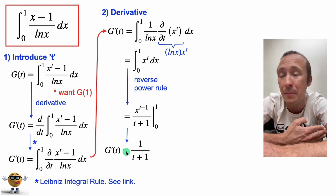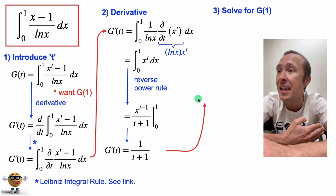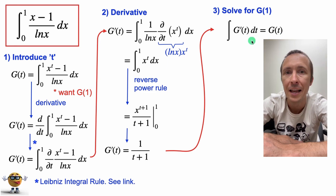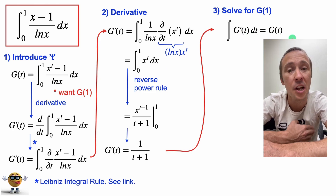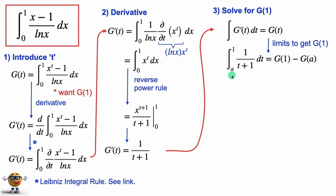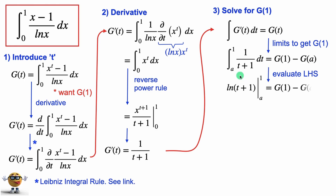Now we don't want g'(t) — we want g(t), so we need to integrate g'(t). This is the fundamental theorem of calculus coming in to recover g(t). The problem is if we integrate without limits we get an annoying integration constant, so we take the integral with limits from a to 1. That gives us g(1) minus g(a). If a is 0, then plugging t = 0 into the left-hand side gives ln(0+1) = ln(1) = 0, so g(0) = 0.